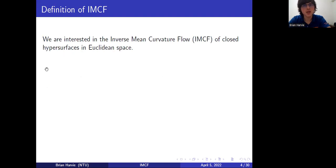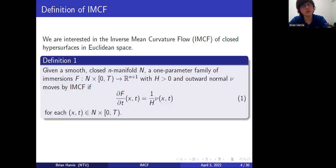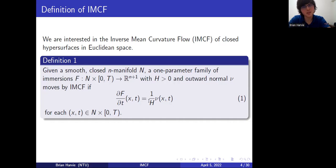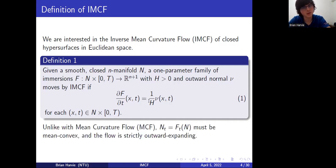Everything I'm going to be saying throughout this talk is for closed hypersurfaces in Euclidean space — a pretty simple setup. The definition of inverse mean curvature flow is a one-parameter family of immersions such that d/dt of the position vector equals one over the mean curvature times the outward normal at each point. If the flow surfaces are embedded, we take outward normal orientation. Importantly, since the flow speed is 1/H, this only makes sense if mean curvature is positive — you can't divide by zero. So unlike with mean curvature flow, everything here is for mean convex hypersurfaces in R^{m+1}.